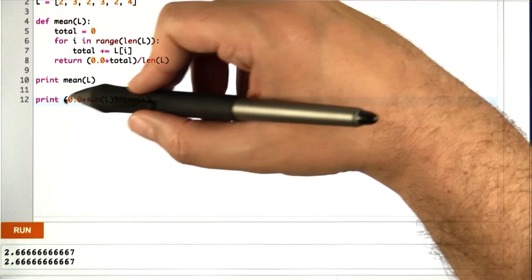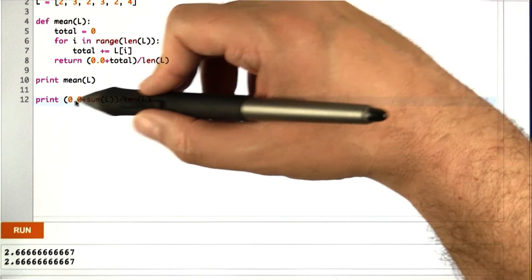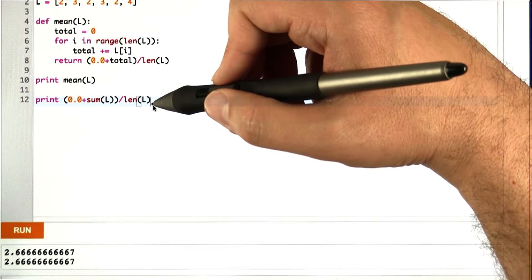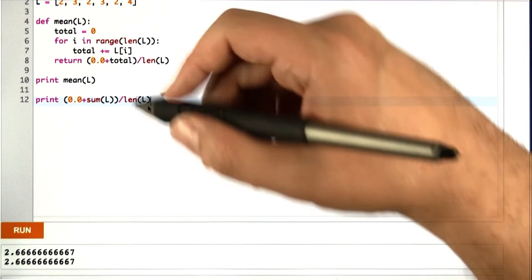Now, what do you suppose the running time is of this second statement here? It's just one little arithmetic statement. It seems like it should be big theta of 1, but it's not.